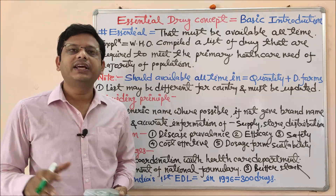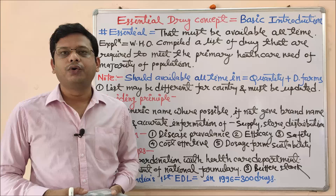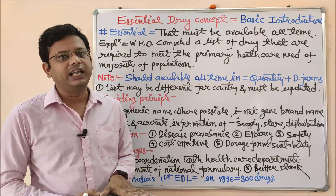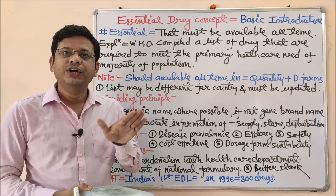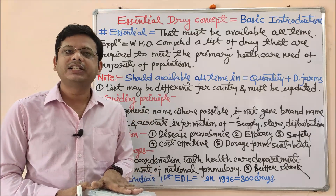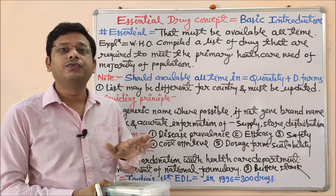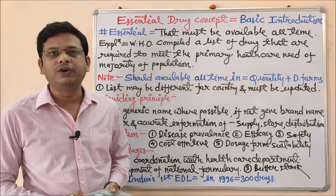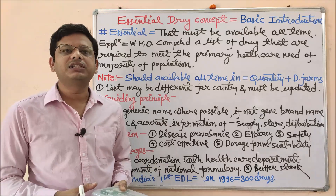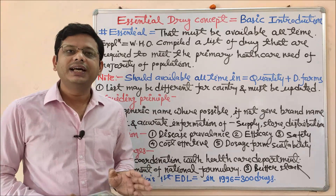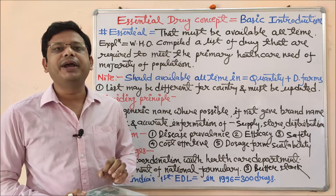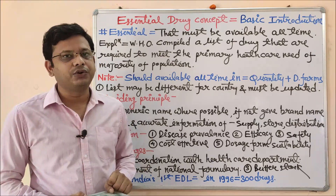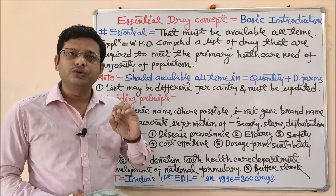If there are children at your home then you have placed many pediatric drugs. If older or geriatric persons are there, you have kept some different medicines useful for them. And if all members of your family are adults, then you must have only basic drugs. So the drug selection is based on your choice, and your choice is based on the circumstances of your family.